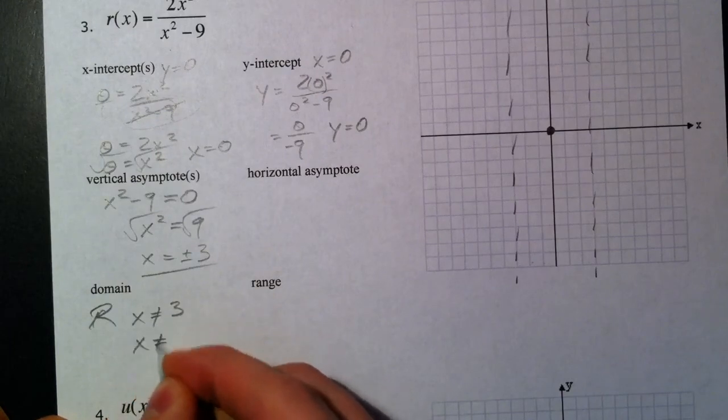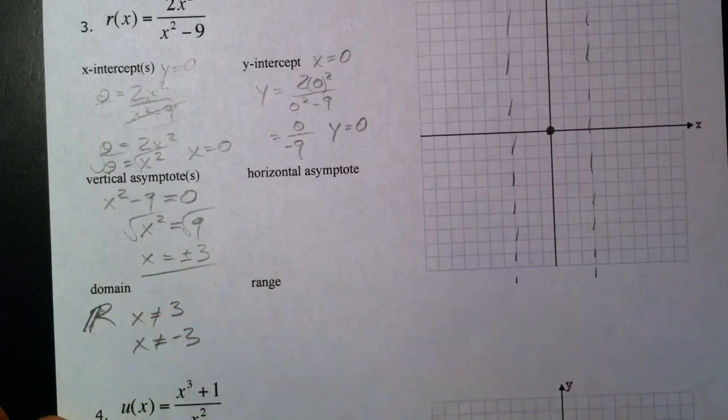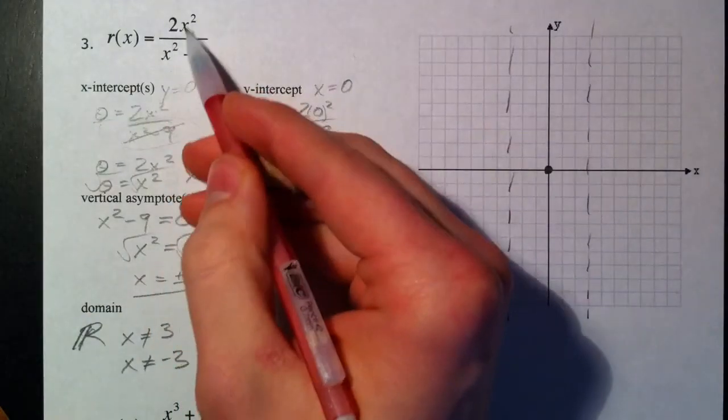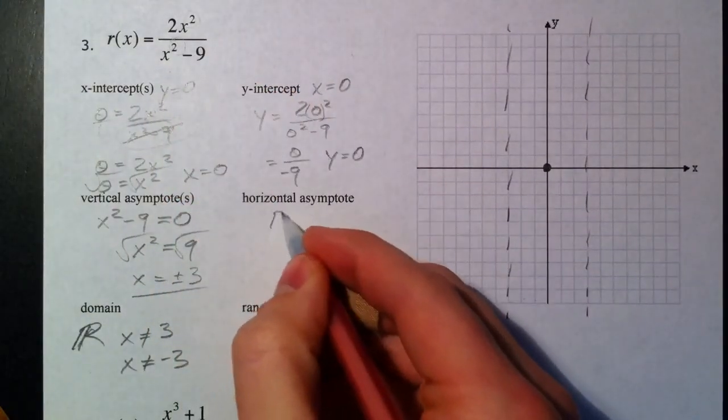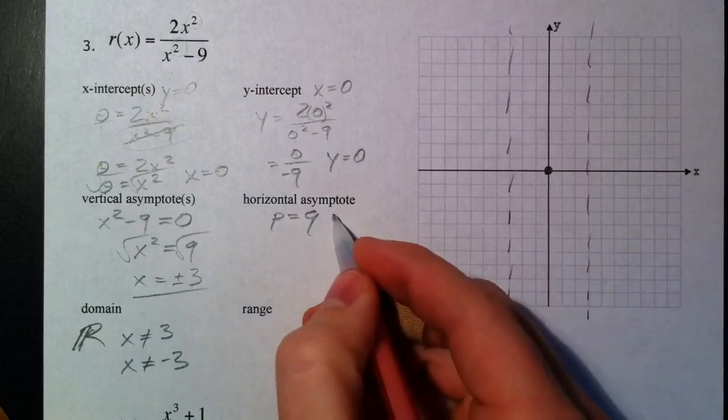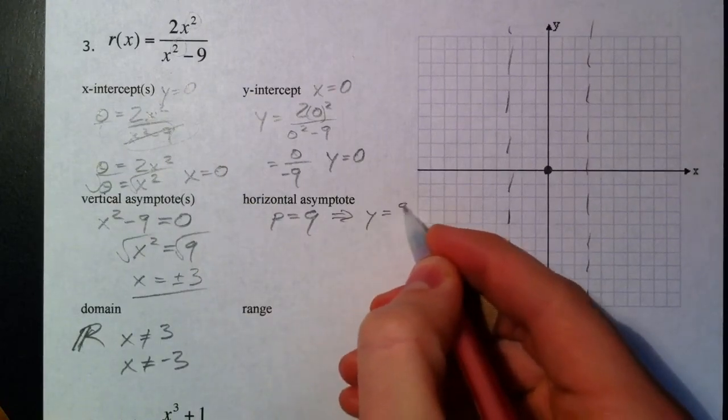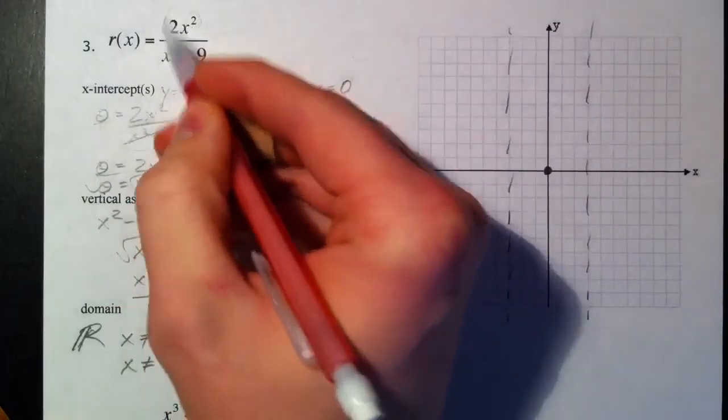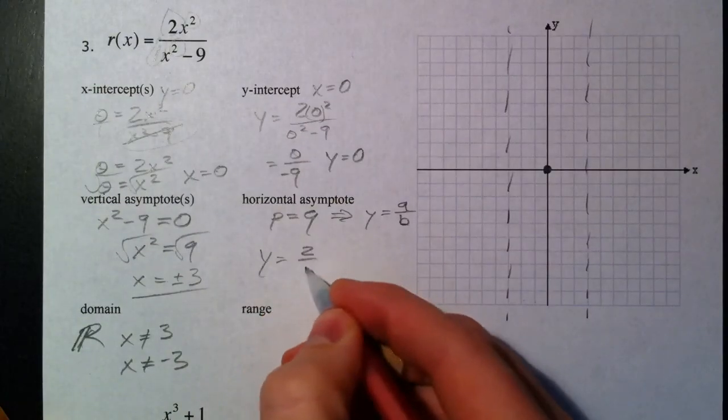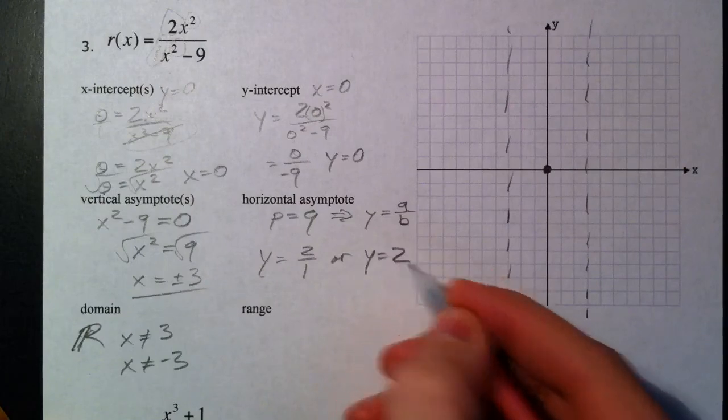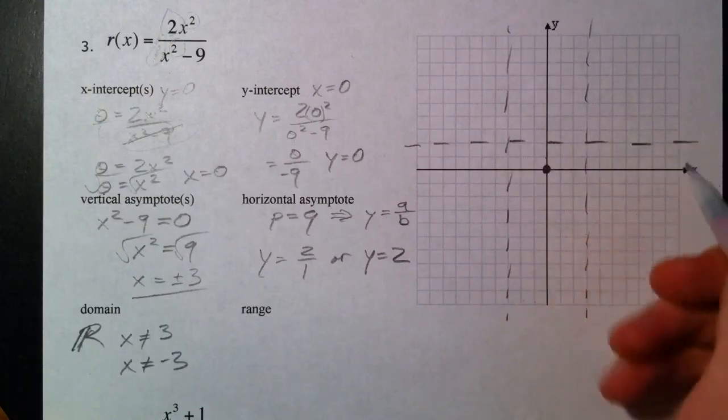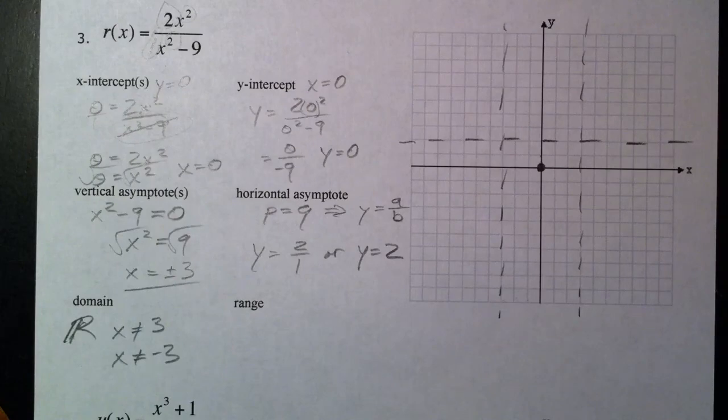Our horizontal asymptote—notice on this one our degrees 2 and 2, and so p is equal to q. With p being equal to q, you take the leading coefficients, y equals a over b. And so our leading coefficient on top is 2, leading coefficient on the bottom isn't there so that's the implied one. So y equals 2 over 1 or y equals 2. So I'm going to go up 2 on my y axis, and so our whole graph is going to be framed by that.